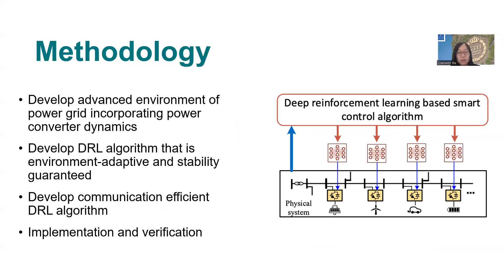To achieve this, we first develop an advanced environment of power grid incorporating power converter dynamics. Then, based on the advanced environment, we leverage deep reinforcement learning to train the data-driven control policy that is able to adapt to the fast fluctuation of renewable energy resources. Next, a communication-efficient control policy is further developed for effective coordination of a large number of converters. Finally, we implement the developed deep reinforcement learning algorithm on the physical system for verification.